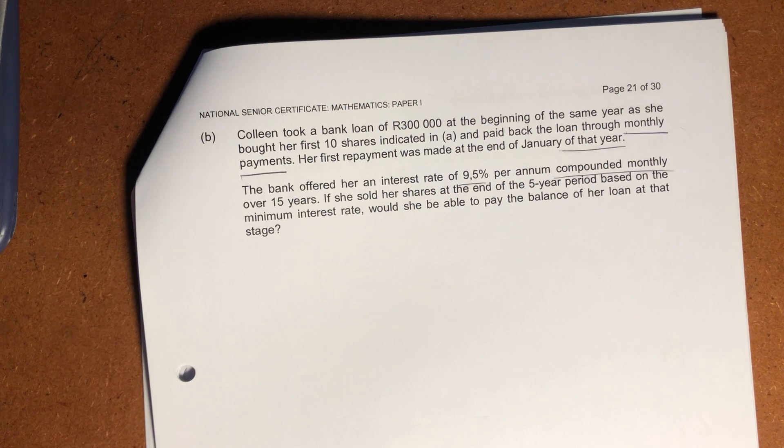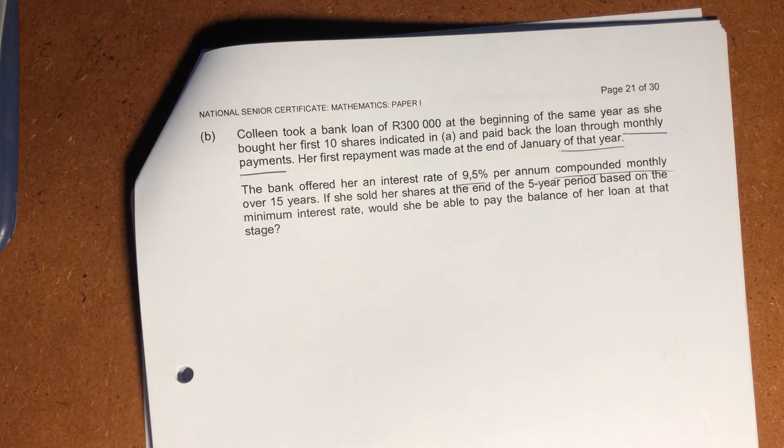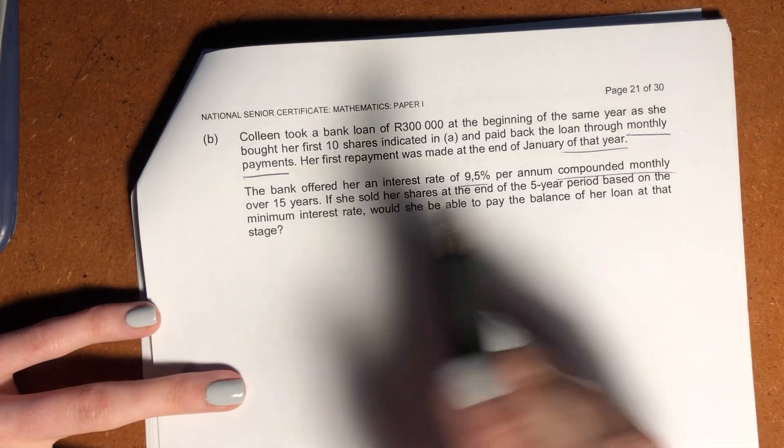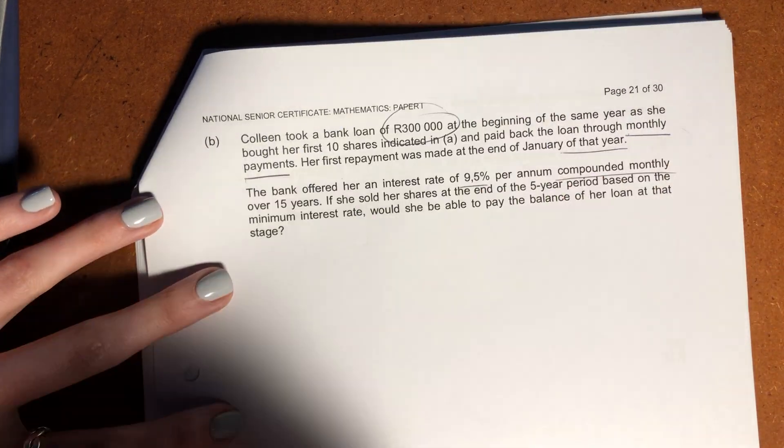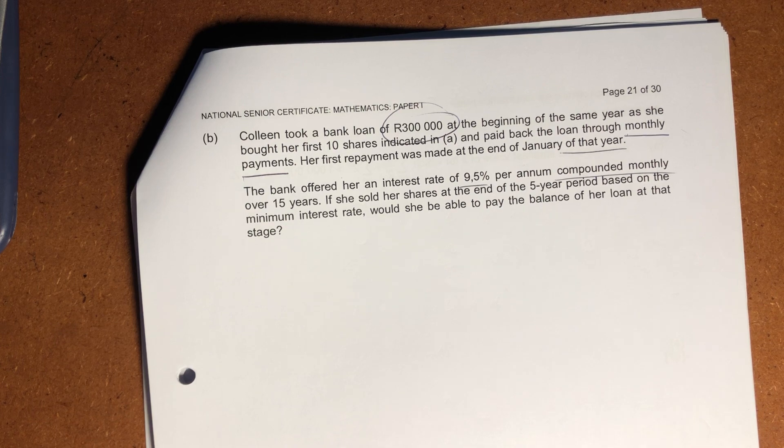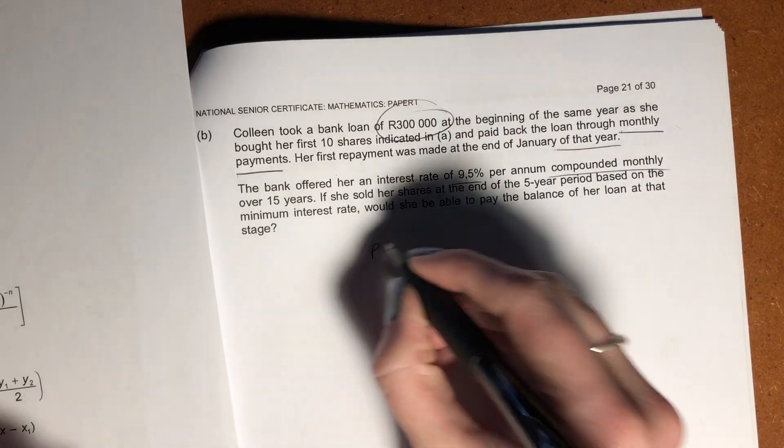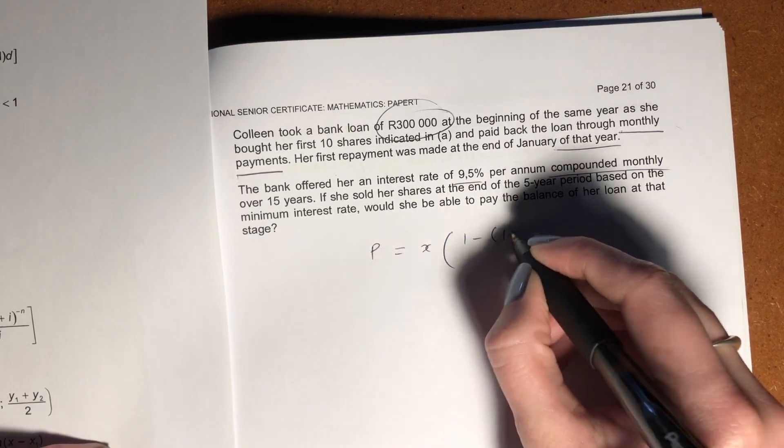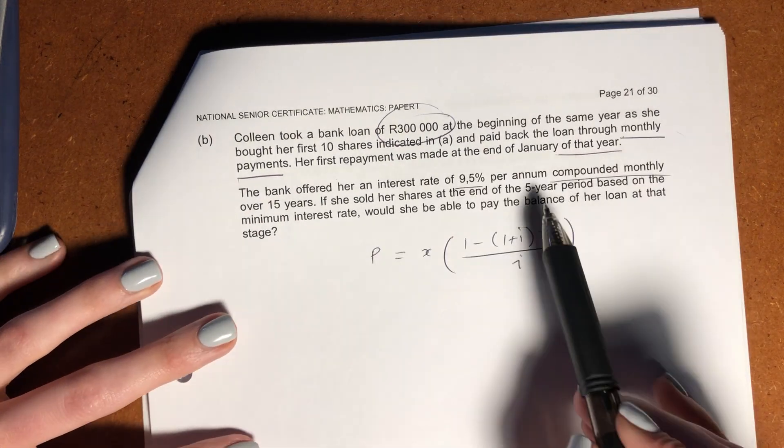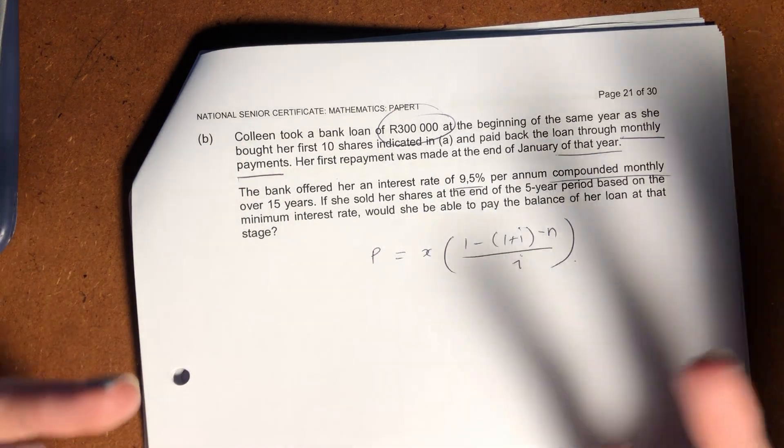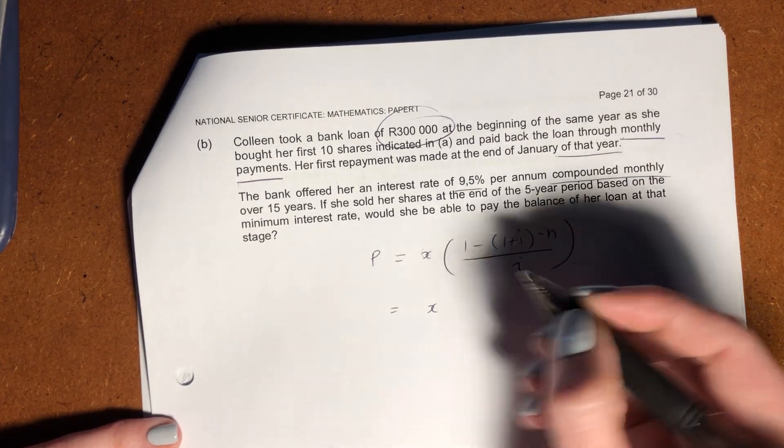The bank offered her an interest rate of 9.5% by annum compounded monthly. Wonderful. They've given us this monthly interest rate so we don't have to convert it because it matches our frequency of payment. If she sold her shares at the end of the five-year period based on the minimum interest rate, would she be able to pay the balance of her loan at that stage? So what we need to do here, there's a number of things we need to do. Firstly, we need to work out what was her installments. So what are her monthly installments? Because we can't really work out anything until we know her monthly installments. So we know that she took out a loan and the present value of that loan is $300,000. So we should be thinking, okay, I know that it's an annuity, but I'm not going to use the future value because I don't know what the future value is and I don't want to know. I only have the present value. So I'm going to use this present value formula to find out what it is she's paying each month to pay off this loan.